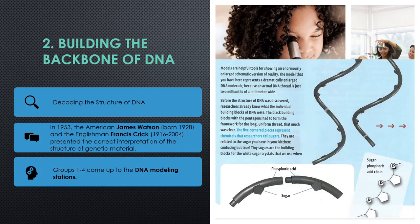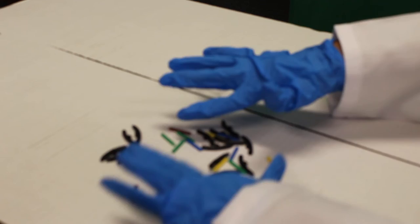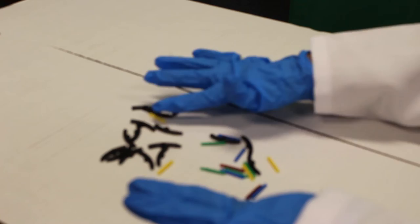In 1953, James Watson and Francis Crick presented their interpretation of the structure of the genetic material. Now let's look at this DNA model that we have here at this station and let's build it together.